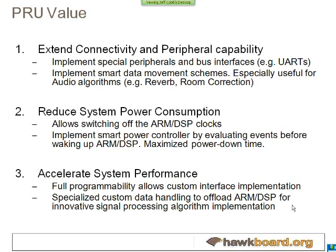Some use cases for the PRU: first, adding different peripherals — TI has already provided code for implementing additional bus interfaces such as UART, and code for data movement tasks like adding reverb or rim correction for audio algorithms. Second, reducing system power — the PRU can turn off clocks to both the ARM and DSP and run independently, entering a very low-power state, then wake up the ARM or DSP based on a system or external event. Third, accelerating system performance by implementing parts of algorithms on the PRU to take cycles away from the DSP and ARM.